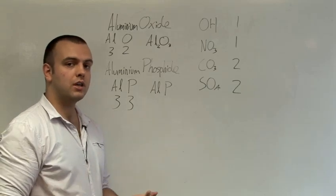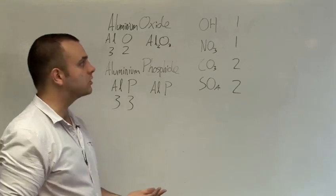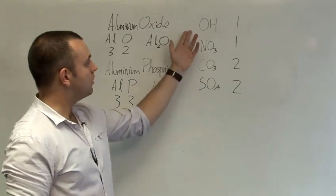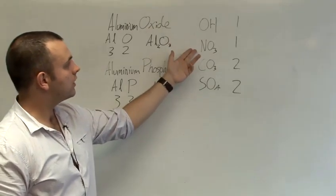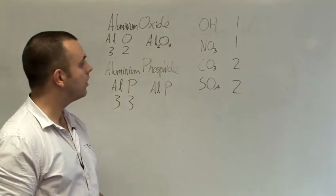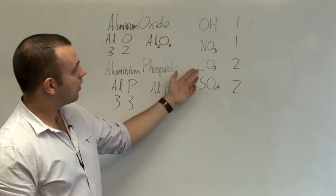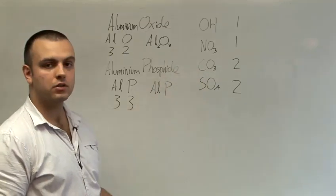Some molecules contain groups which are not elements. The four most commonly seen ones are hydroxide and nitrate, which have a valency of 1, and carbonate and sulphate, which have valencies of 2.